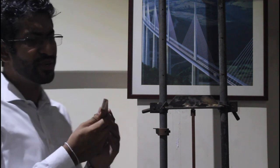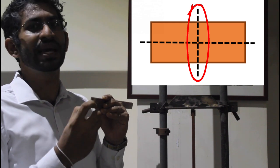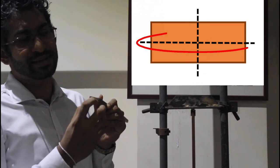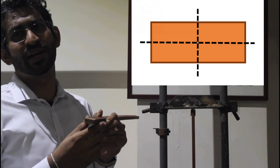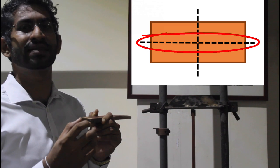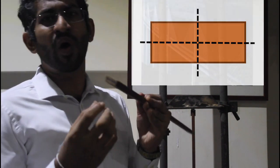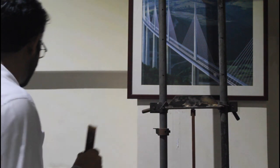Another important thing to know is the major axis and minor axis of a cross section. If we consider this cross section, the axis that contains the highest I value is the major axis. The other axis, which contains the lowest I value, is the minor axis. Buckling will normally happen over the minor axis of the column. If the column is restrained through the minor axis direction, buckling can also happen over the major axis.